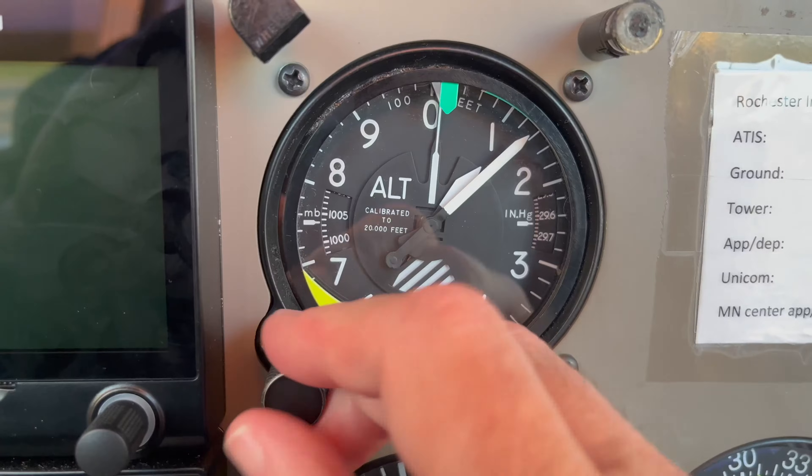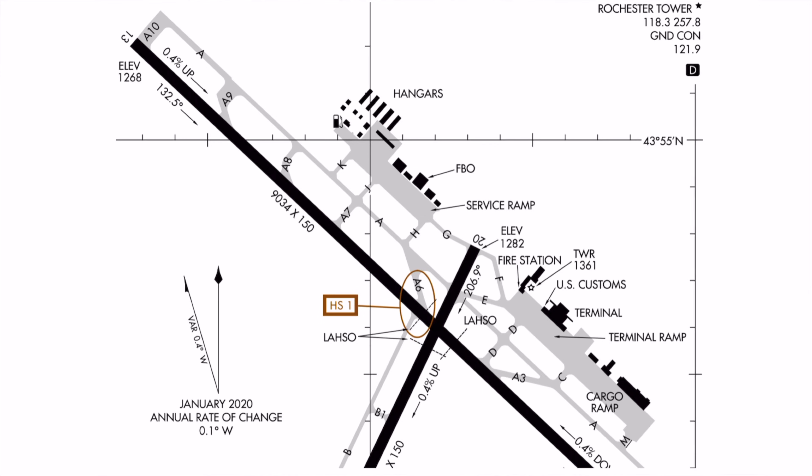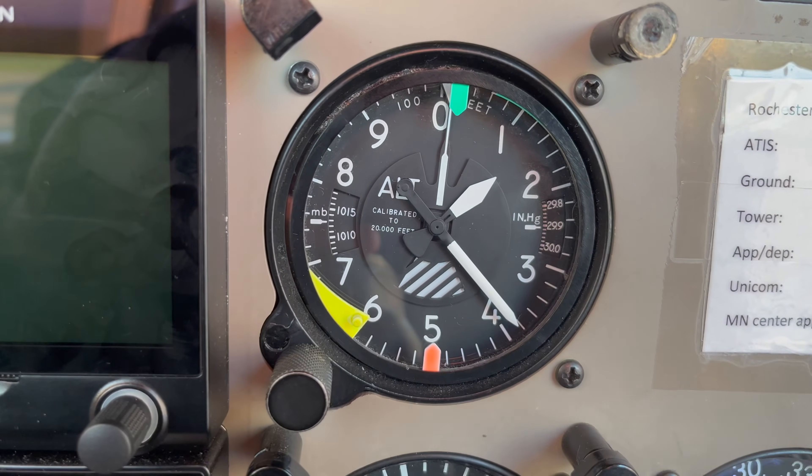The easiest way to estimate pressure altitude is to use an altimeter. Earlier this morning, the altimeter setting was reported as 29.80. Setting the altimeter to 29.80 should mean the altimeter indication approximates true altitude. In this case, my altimeter is indicating just above 1,280 feet. Looking at the airport diagram, it shows the elevation near where I'm parked is 1,282 feet, so this appears to be pretty accurate. If I change the altimeter setting to 29.92, the indicated altitude should now equal pressure altitude. Turning the knob to 29.92 shows our pressure altitude to be just a hair over 1,380 feet — I'd guess 1,382 feet.